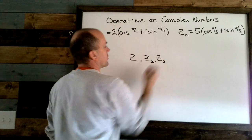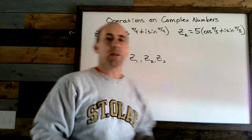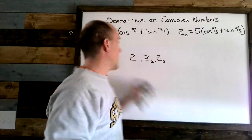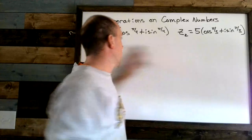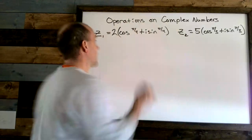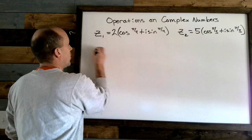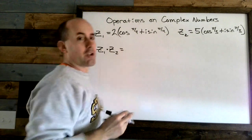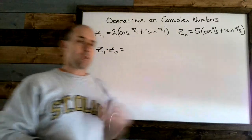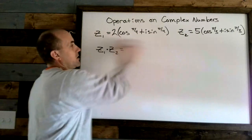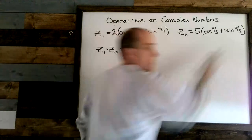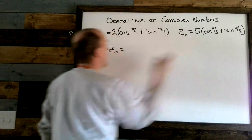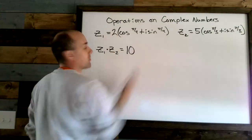Z₁, z₂, z₃ — these are just short ways of writing a complex number. We really reserve the letter z to represent complex numbers. Our first example is z₁ multiplied by z₂. When you multiply these two things, you look at the radius out front: we have 2 and we have 5, and you simply multiply those together to get 10.